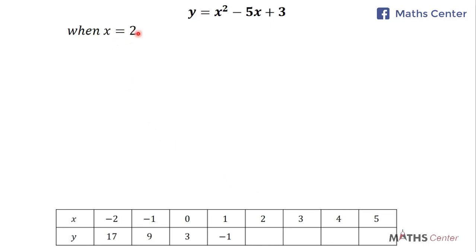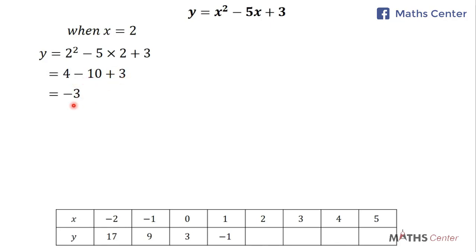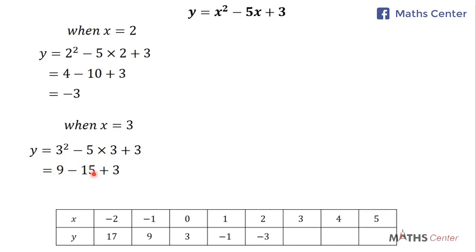When x = 2, y = 2² - 5 × 2 + 3 = 4 - 10 + 3 = -3. When x = 3, y = 3² - 5 × 3 + 3 = 9 - 15 + 3 = -3. So when x is 2 or 3, y is -3.